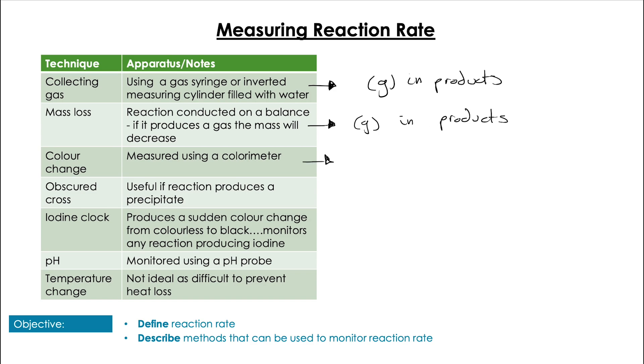Color change. Obviously, the products being a different color from the reactants, so that we can measure the change in absorbance at different wavelengths. Obscured cross, which is basically when we have a solid precipitate product. Iodine clock. If you produce iodine, then we're going to have an iodine clock reaction. pH. If we have a H+ or OH- concentration change from reactants to products in either direction, we're going to have a change in pH. And temperature change.